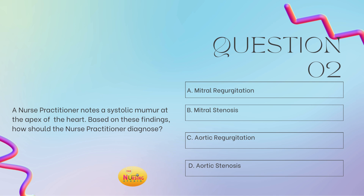Question number two: a nurse practitioner notes a systolic murmur at the apex of the heart. Based on these findings, how should the nurse practitioner diagnose? Is it A, mitral regurgitation; B, mitral stenosis; C, aortic regurgitation; or D, aortic stenosis? So sassy systolic says men really are stupid — mitral regurgitation and aortic stenosis — so we know it has to be either A or D. And this says that it is located at the apex of the heart, so that is mitral. Because the base is aortic, apex is mitral. So your answer is A, mitral regurgitation.